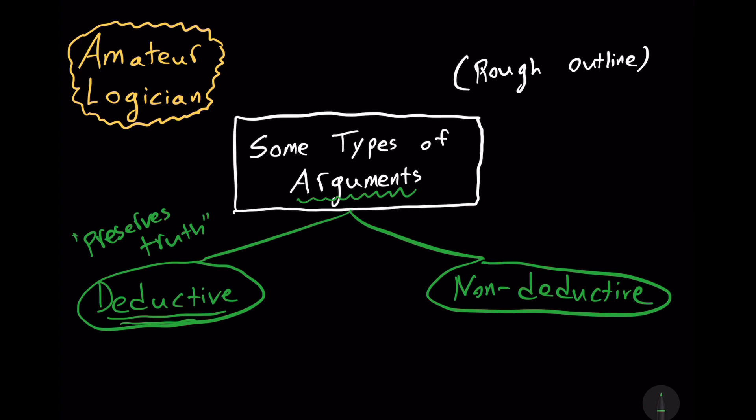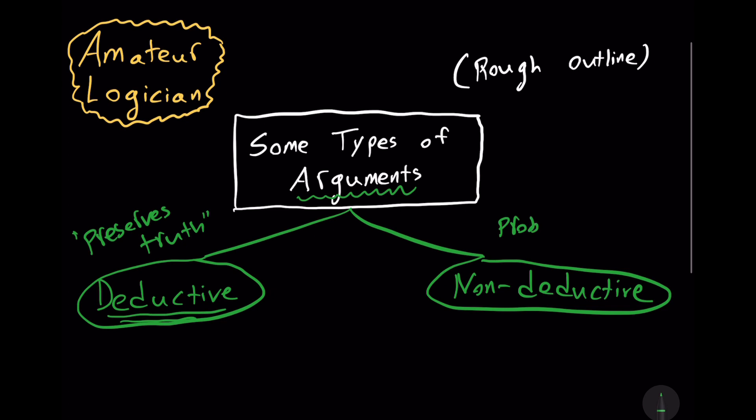A non-deductive argument is probable. It doesn't bring us a conclusion conclusively. To be sure, the probability might be very, very high, it might be 99.9999999%, but nevertheless, it is not deductive.